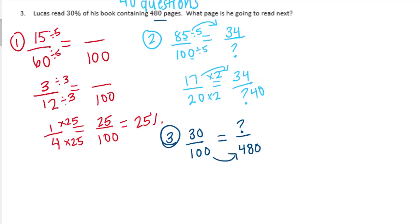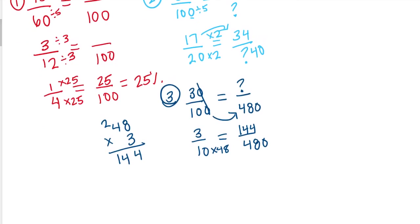So I can't easily get there, so I'm going to make this 3 tenths. And now I can do 10 times 48 is equal to 480. So let's do 3 times 48. 4 times 3 is 12 plus 2 is 14. So he's read 144 pages. The page he's going to read next would be page 145.